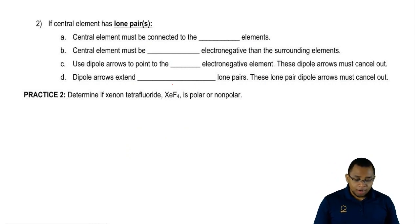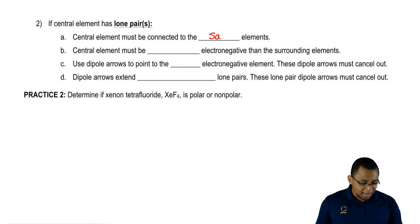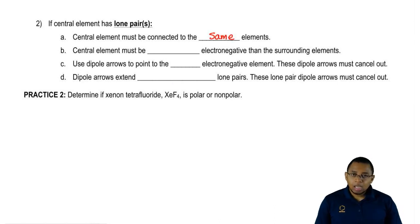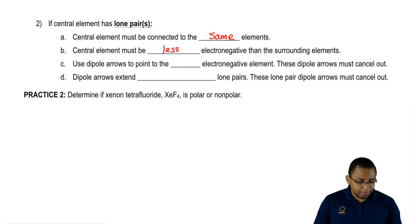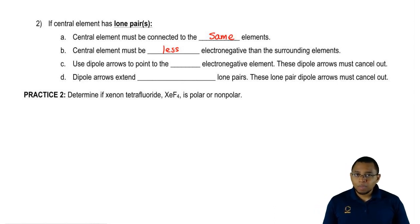When our central element does have lone pairs, the central element must be connected to the same elements. We're also going to say that the central element must be less electronegative than the surrounding elements. Those two rules stay the same whether we have lone pairs or we don't.